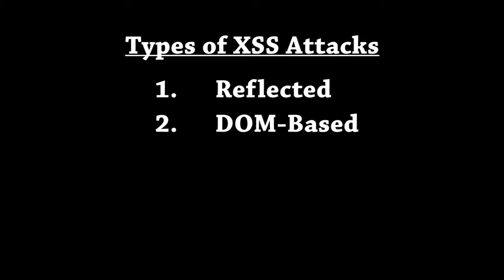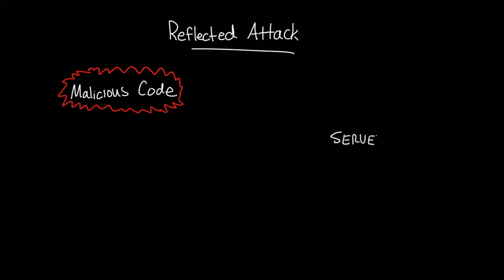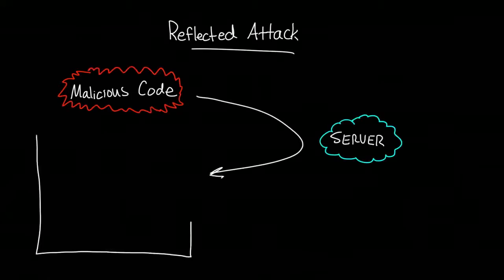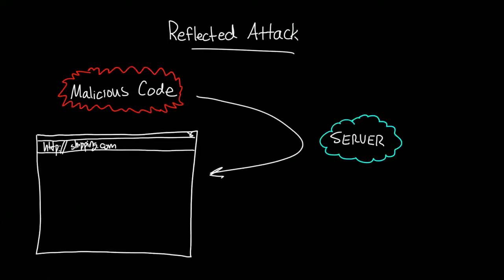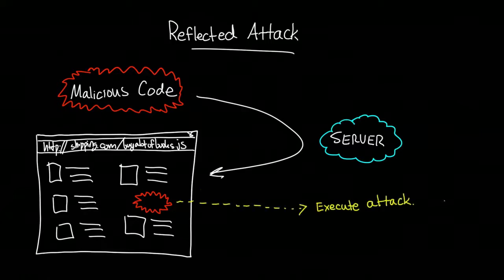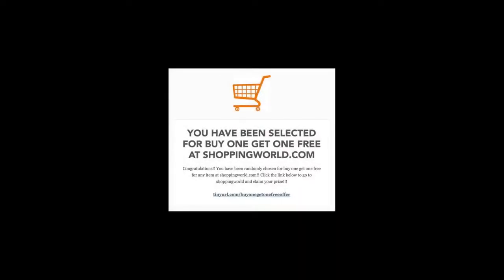Reflected, DOM-based, and stored attacks. In a reflected cross-site scripting attack, malicious code is sent as an input to a server. The server then reflects the code back to a user's browser and displays it somewhere on the page. This can happen when a user clicks a malicious link or opens an infected email. This is a common trick in phishing attacks, where an attacker tricks a victim into clicking on a link that is a trusted domain but can embed injected scripts into the link as parameters.